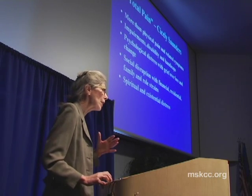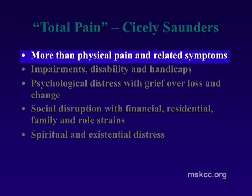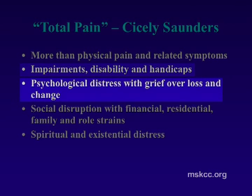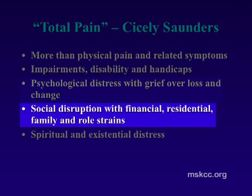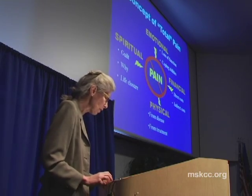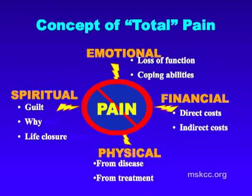Cecily Saunders, the founder of the modern hospice movement in England, talked about 'total pain' — that pain is more than physical pain and related symptoms. It includes the impairment, disability, handicaps, and change of life with advanced cancer. There's psychological distress with grief over loss and change, social disruption with financial impact and role strains, and spiritual and existential distress: 'Why am I being punished? Why is this happening to me?' This is why we have a multidisciplinary team approach.